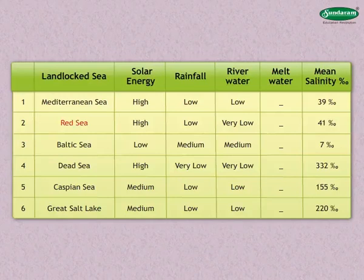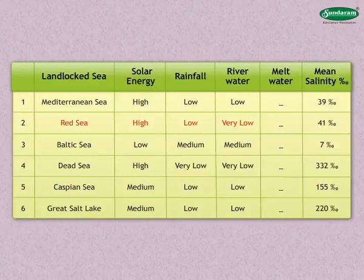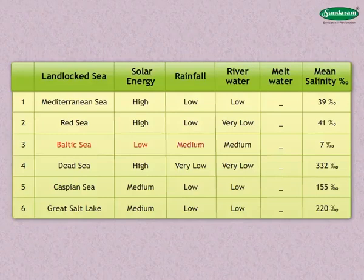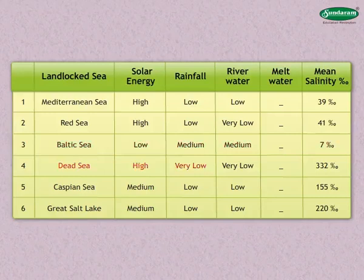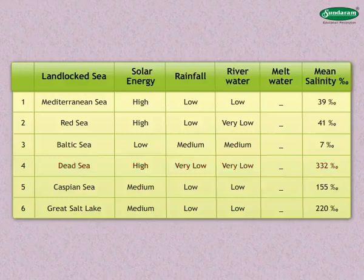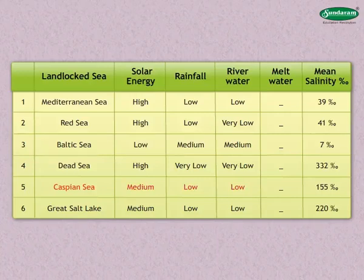In the Baltic Sea, the solar energy received is low, the rainfall is low, and the supply of fresh water by rivers is low.